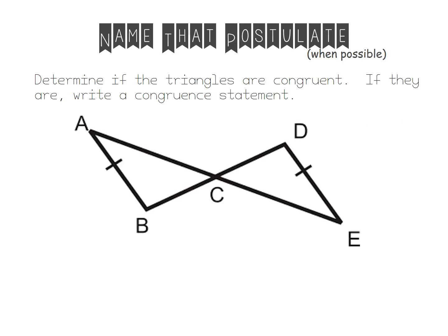Our last example is to determine if the triangles are congruent and write a congruency statement. It looks like they only give me one set of congruent sides. Is there any other piece of information we can pull? It looks like we have a set of vertical angles. Is there anything else? I don't have any other congruent sides, and it doesn't look like I can determine any other congruent angles. So right now I just have a side and an angle. We don't have any postulates with just a side and angle that prove congruency, so this would be not enough information. We can't prove congruency.